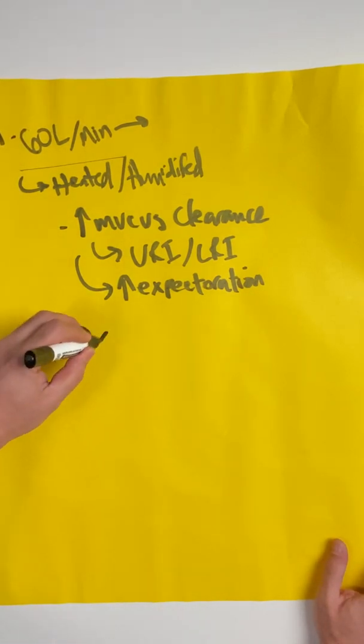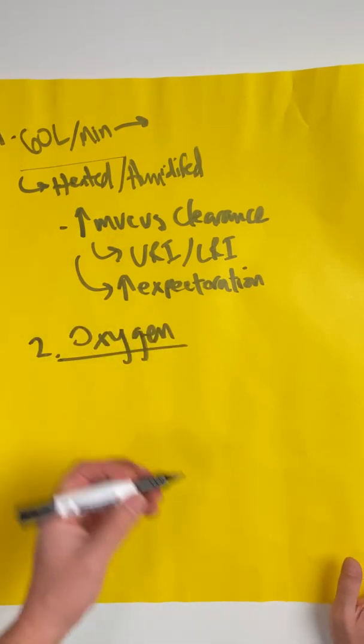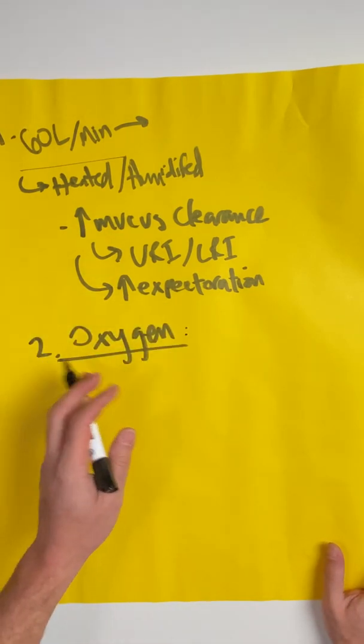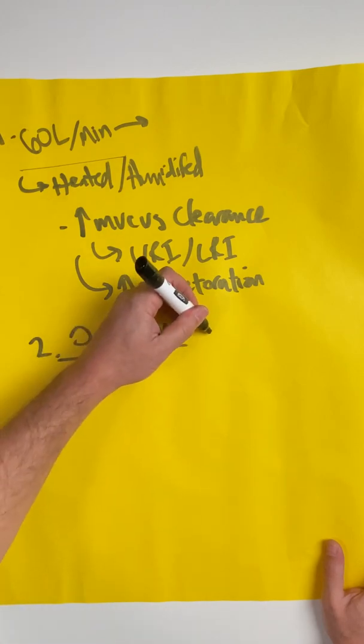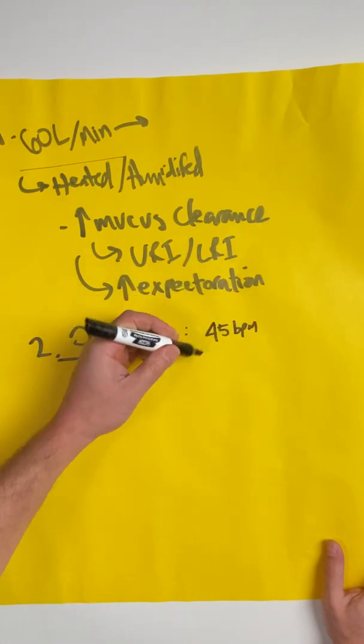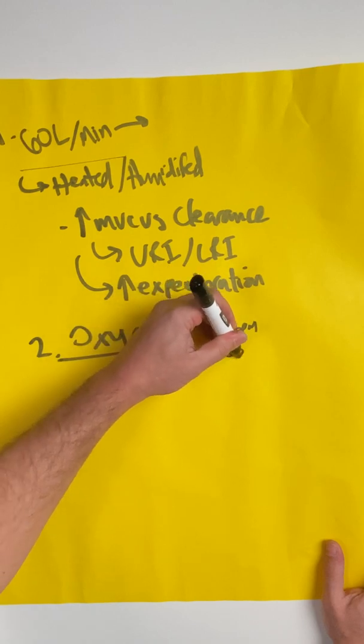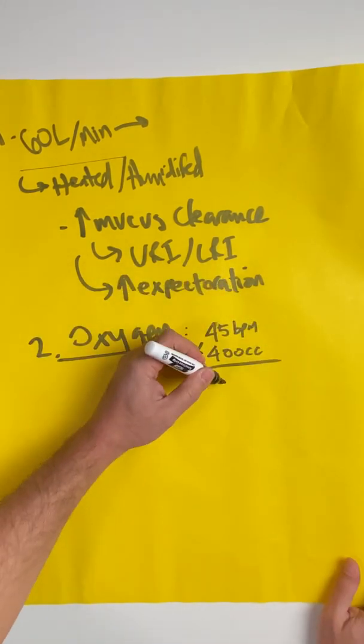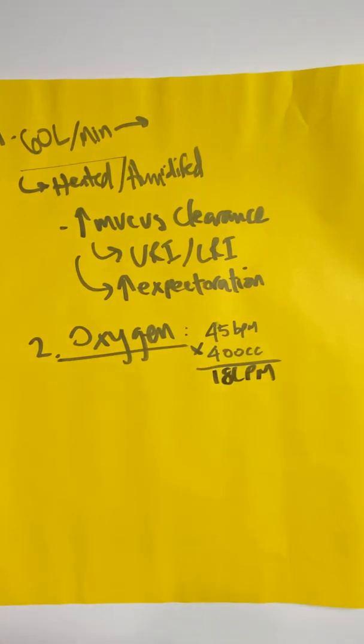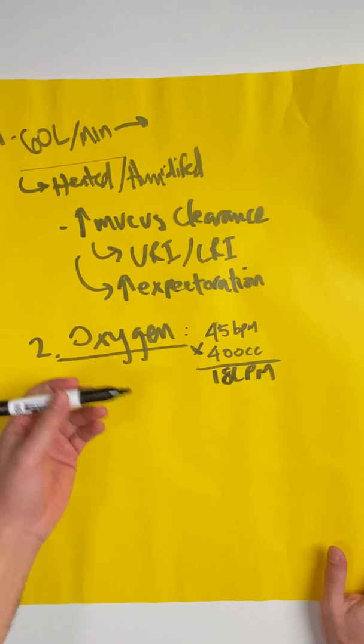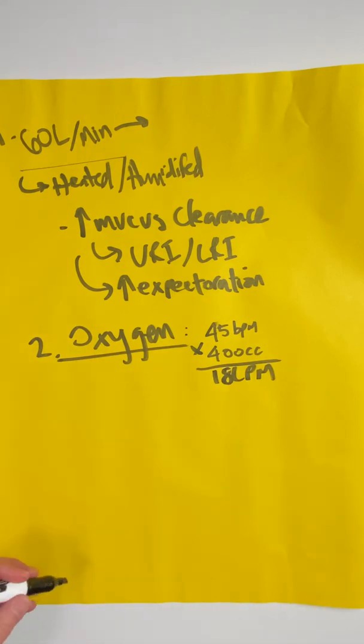The second way is providing lots of oxygen. I'm going to give you a patient example. Let's say we have a patient who's in respiratory distress with a pneumonia and they're breathing at a rate of 45 breaths per minute. They're taking a tidal volume of about 400 cc's per breath. That's going to be a minute ventilation of 18 liters per minute. Now let's see what happens when we put a person on a non-rebreather mask, a pretty traditional way of supplying oxygen to our patients.